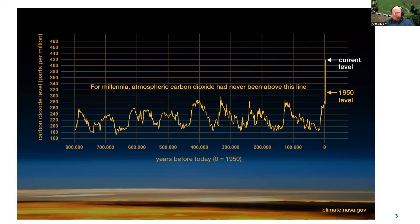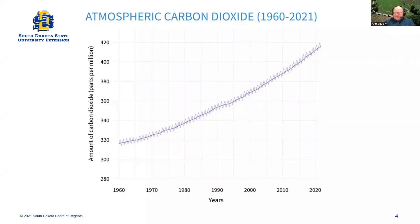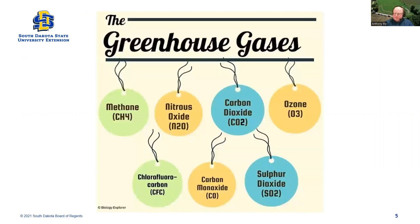That leads to the talk about greenhouse gases and the greenhouse effect. Looking at the last part of that graph, CO2 is well above 300 and now well above 400 parts per million in roughly a 60-year time frame. There's a lot of pointing fingers and blaming, but this data is what it is.